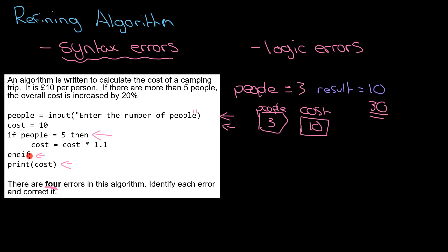What should it be? The algorithm is written to calculate the cost of a camping trip. It is ten pounds per person, and I've said I've got three people, so the result is ten but I should be getting thirty. I've instantly found a problem. Where's it going wrong? The most likely candidate is this line here: cost equals ten. That should be multiplied by the number of people. So that should be cost times by people.